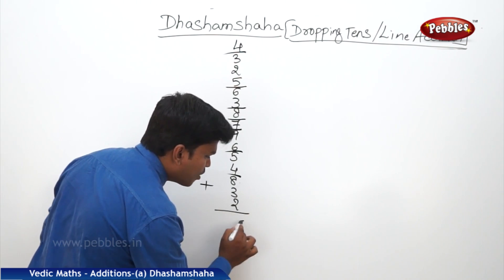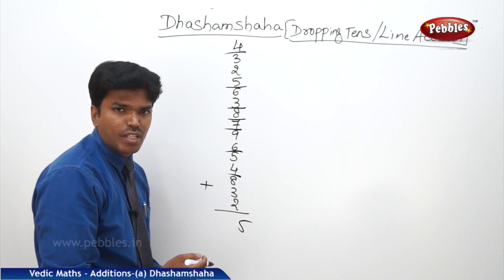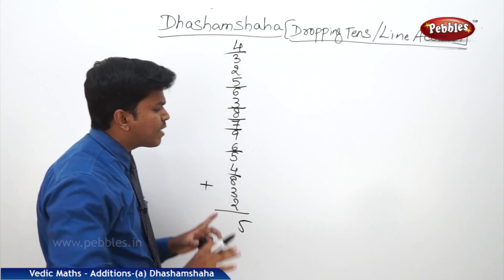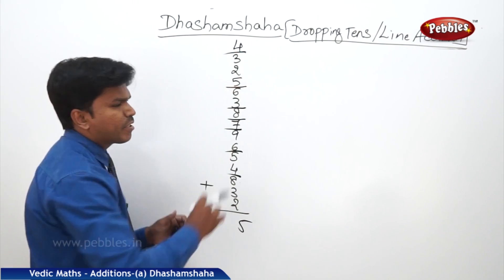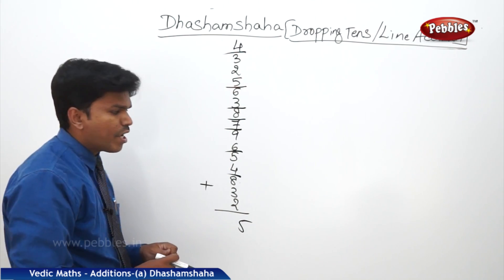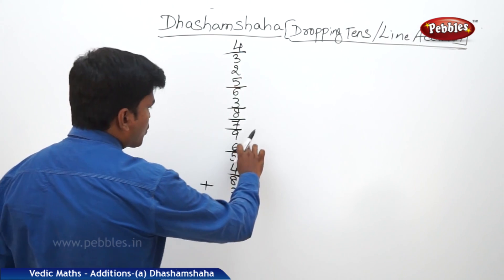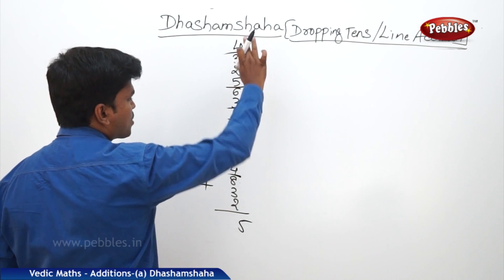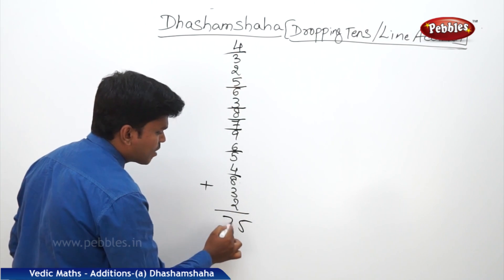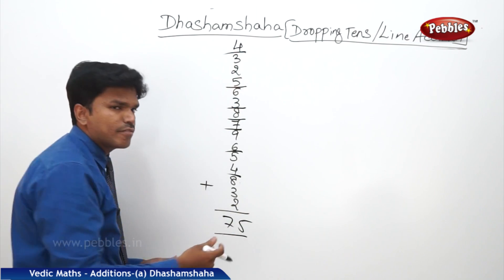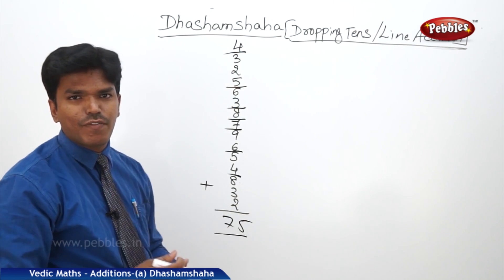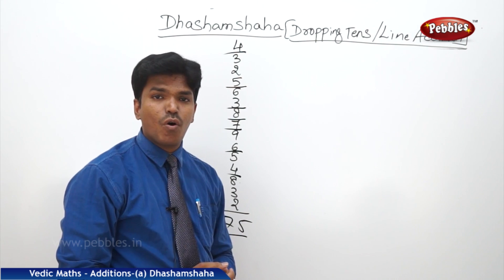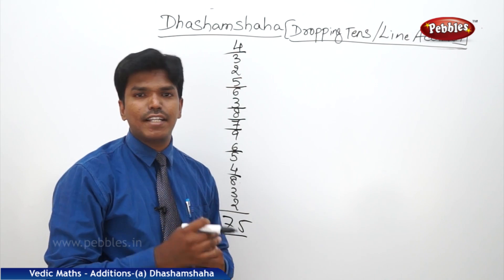Write that 5 immediately down. Now you count how many tens you have dropped. 2 plus 3 is 5. 5 plus 2 is 7. So what is your answer? 75. That's how easy it is.